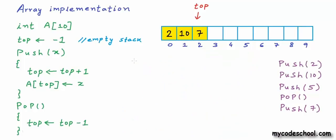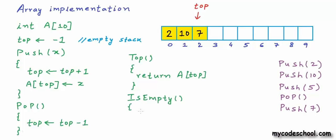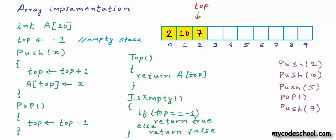We have also defined two more operations in the stack ADT. The top operation simply returns the element at the top of the stack — we return the element at the top index. To verify whether the stack is empty, we check the value of top: if it equals -1, the stack is empty and we return true, otherwise return false. Sometimes pop and top operations are combined so that pop both removes and returns the top element.